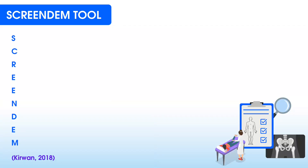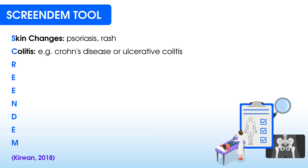Let's dive into the SCREENDOM Tool. S stands for skin changes — we might look for signs of psoriasis or a rash over certain joints experiencing spondyloarthritis. C stands for colitis, where patients might have inflammatory bowel disease such as Crohn's disease or ulcerative colitis. When multiple inflammatory pathologies seem to be present in the body, it gives a higher suspicion of axial spondyloarthritis. For example, back pain in a 20-year-old with a previous history of Crohn's or colitis might raise suspicion of ankylosing spondylitis.